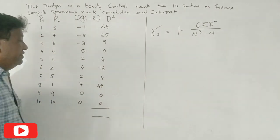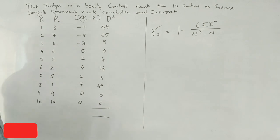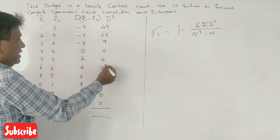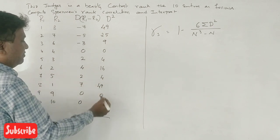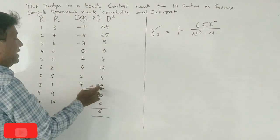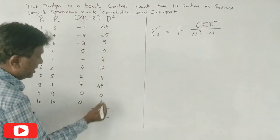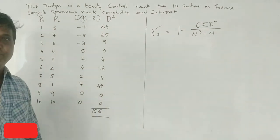Now we calculate summation of d squared. 9 plus 9 is 18, 23, 27, 33, 37, 46, 4, 8, 9, 11, 15... This equals 156.